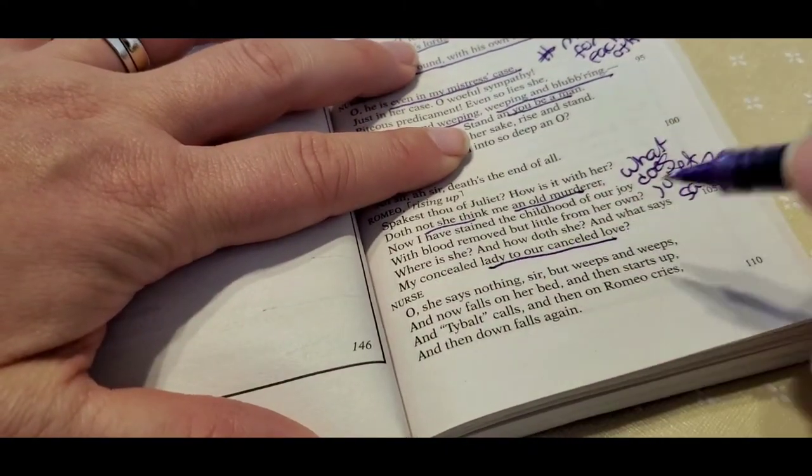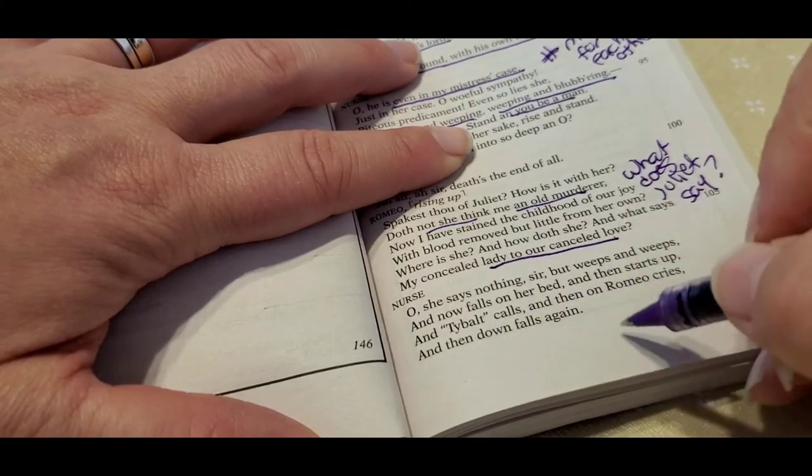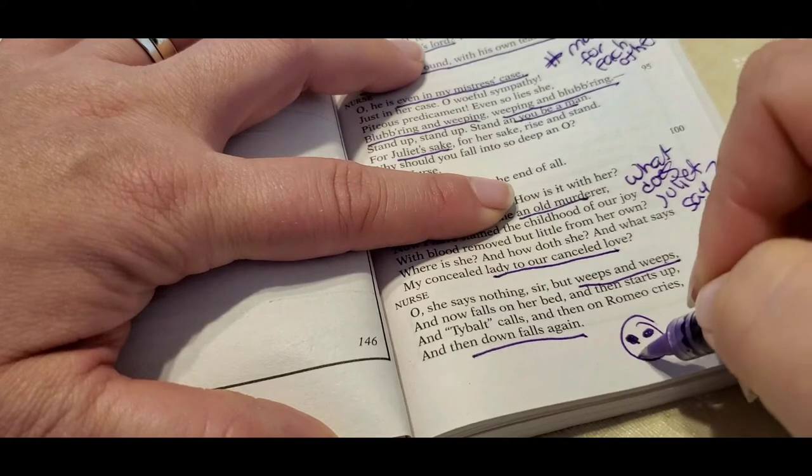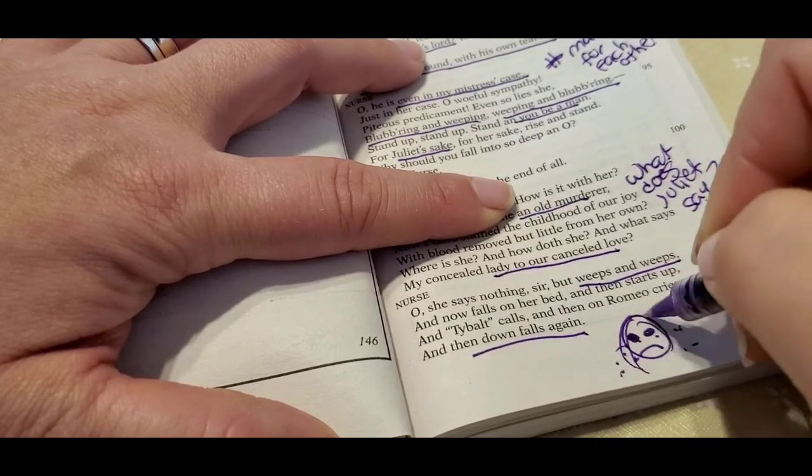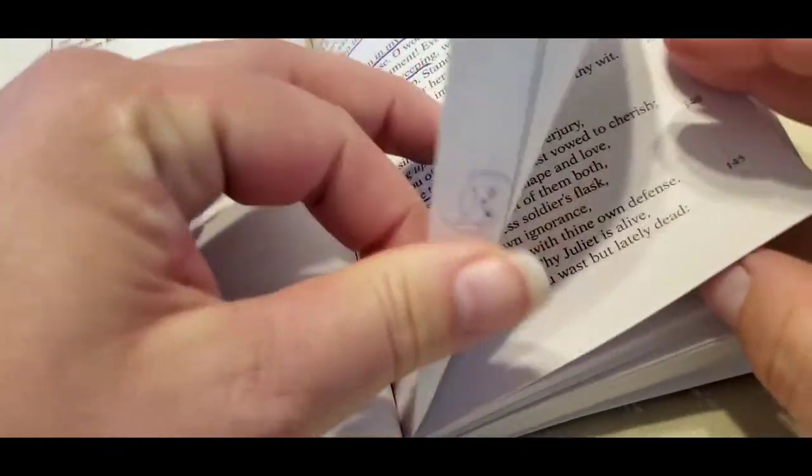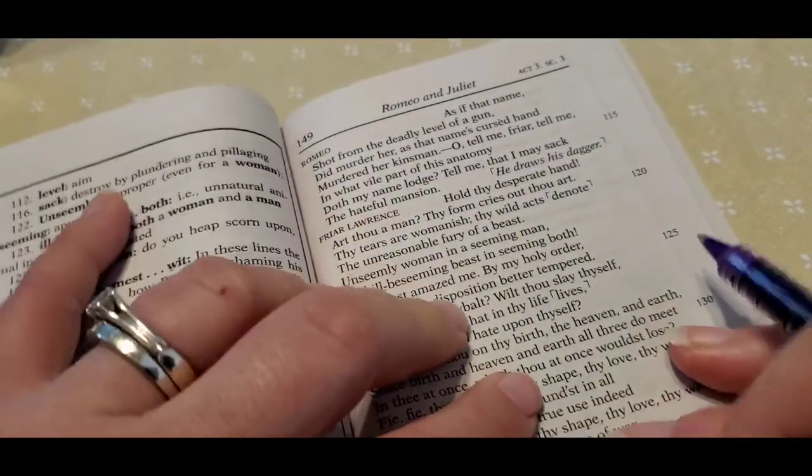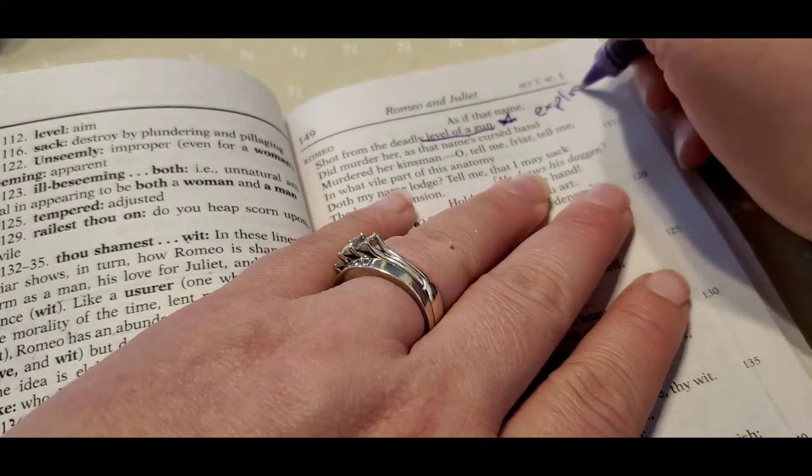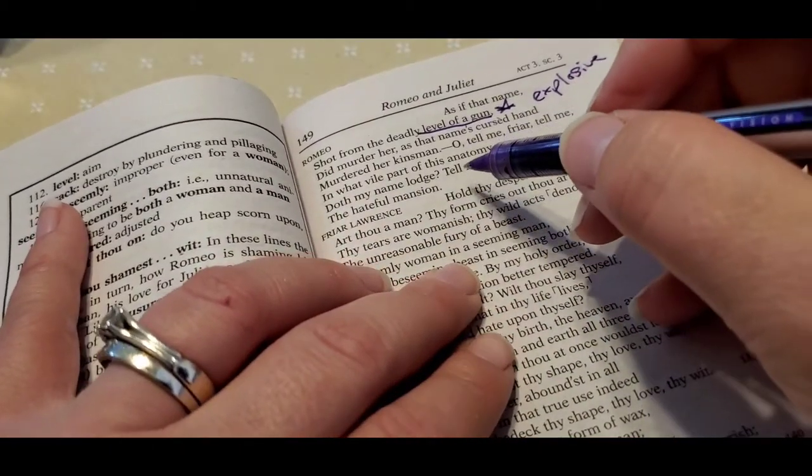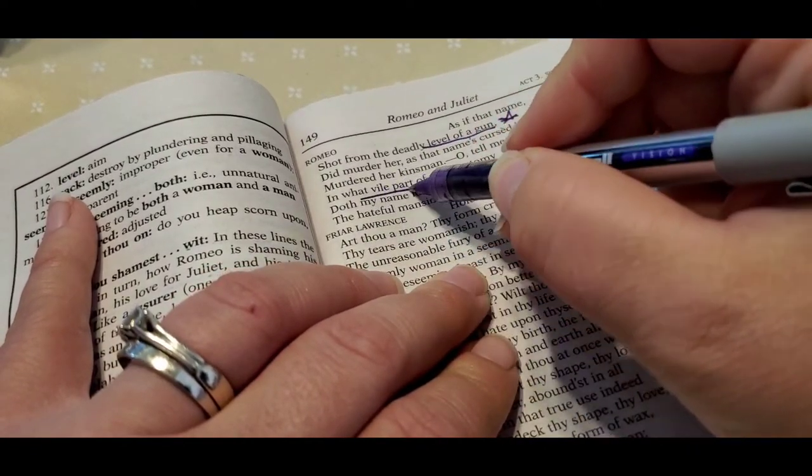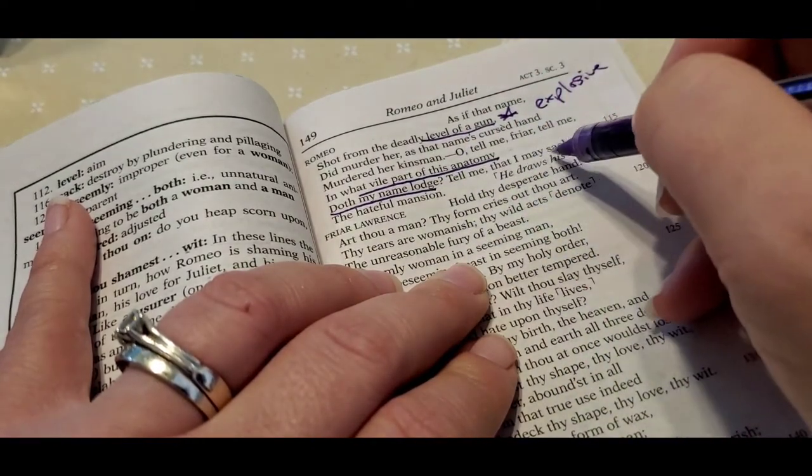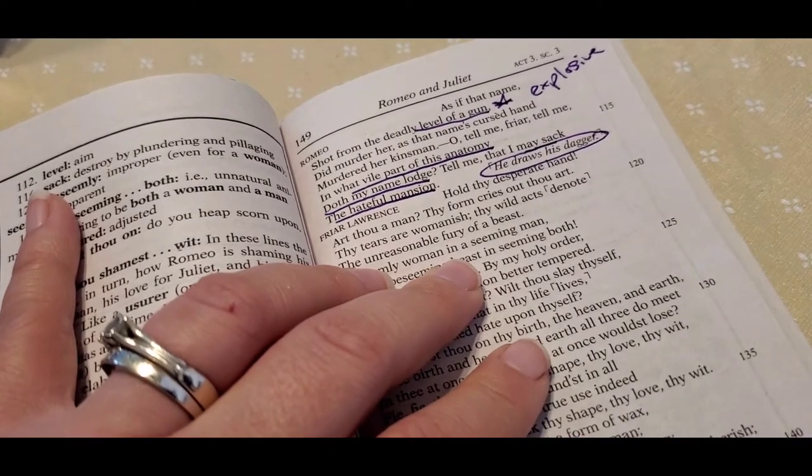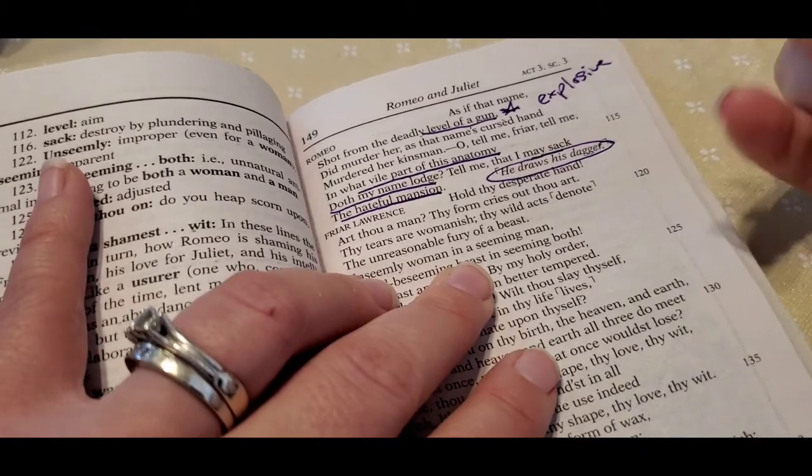And what does she say of our canceled love? And she says nothing, but she weeps and weeps and cries on her bed and cries Tybalt and calls and cries and falls down again. So again, she's crying and weeping and crying and weeping. And he says as if that name shot from the deadly level of a gun. Remember that fire powder we talked about before? So you've got that imagery again of explosive. Did murder her. And then he says, tell me friar, what vile part of this anatomy of my body does my name lodge? Tell me and I may sack the hand, the hateful mansion. So he pulls out his dagger. And he says, tell me where does my name lie? And I will just stab it out to make it better.